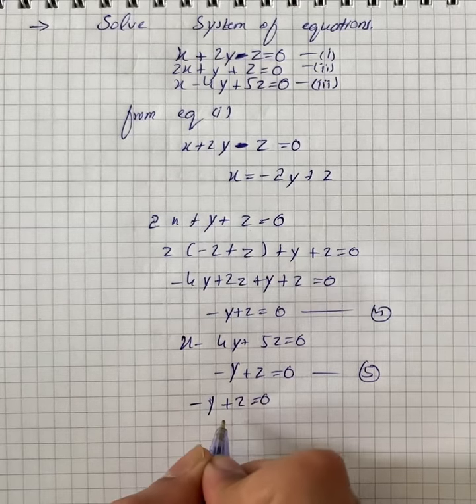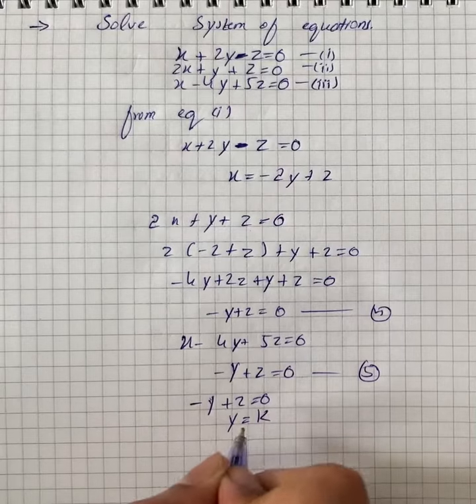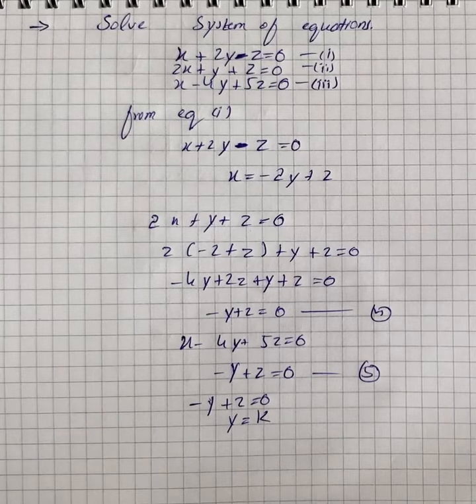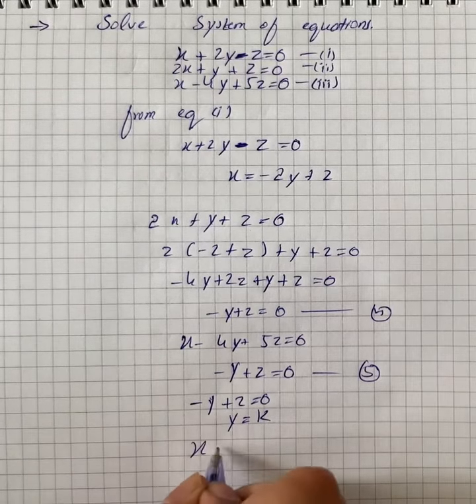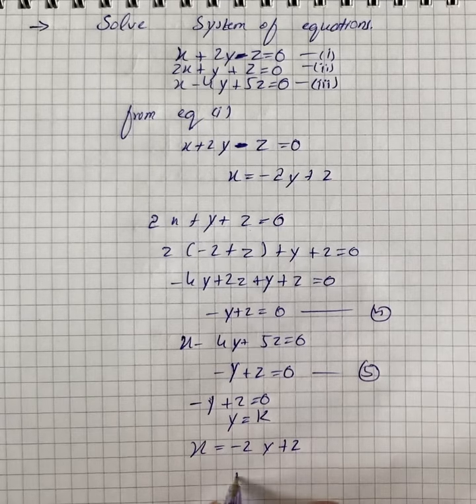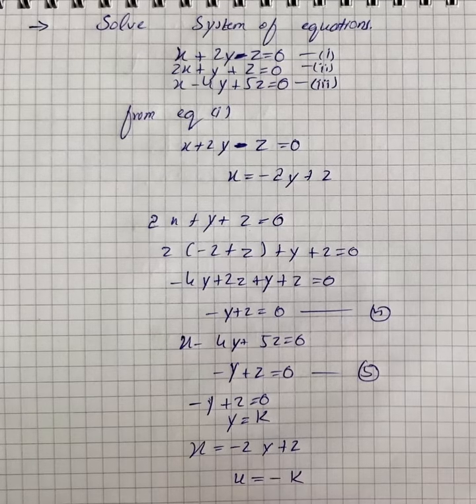From equation 4, we can write that minus y plus z equals 0, and y equals k. We will substitute the value of y and z in x, so we have x equals minus 2y plus z, which gives x equals minus k.